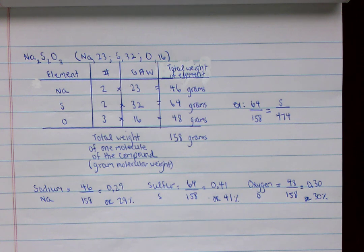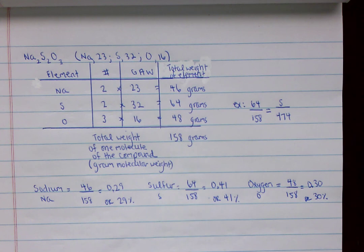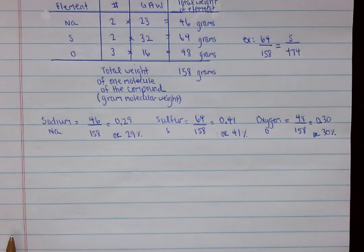So that's what we're going to do on this particular one. We don't even have to write a ratio for these. We're just finding the percent. We're just dividing the total weight of each element by the total weight of one molecule of the compound.